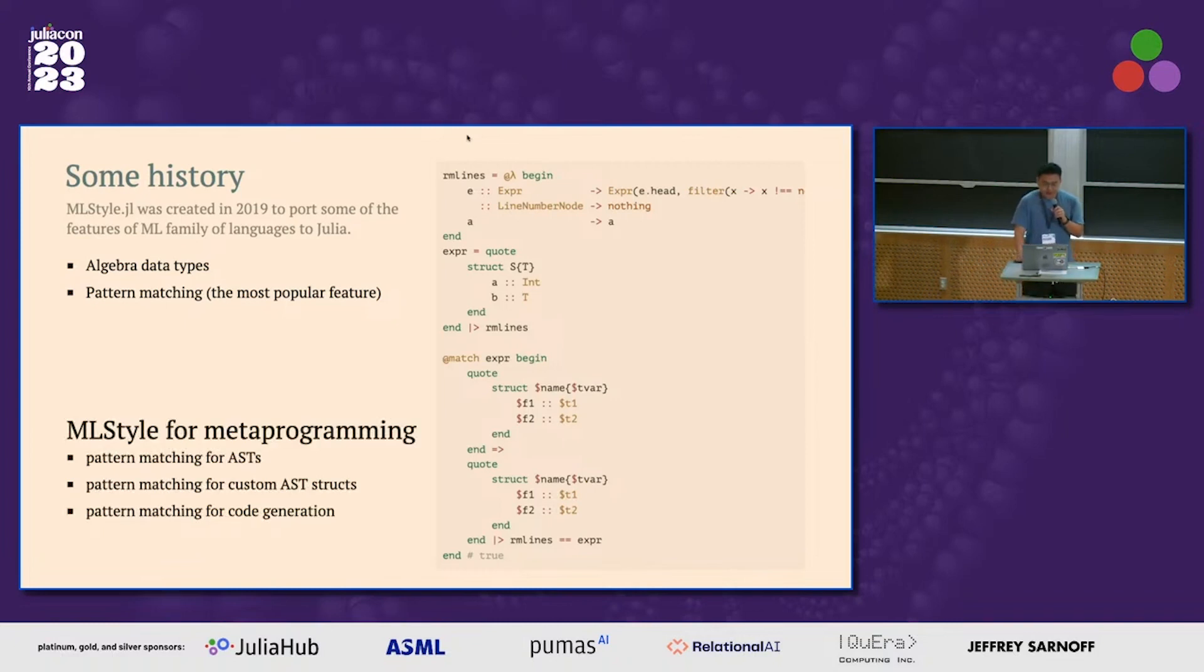And we have been using MSDA for metaprogramming for quite a long time, and mainly used for pattern matching on Julia ASTs, or pattern match for custom AST structures that represent some Julia AST. And or we also use pattern match to do cogeneration from a pattern we matched from Julia AST.